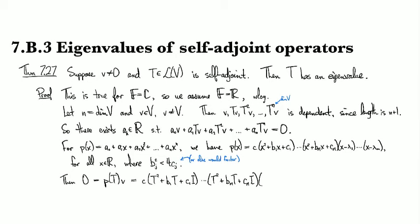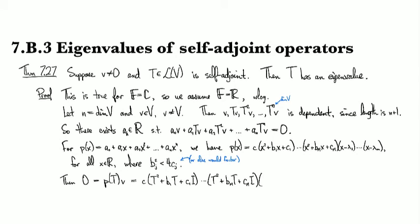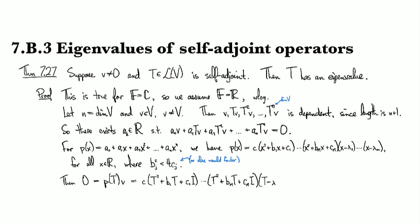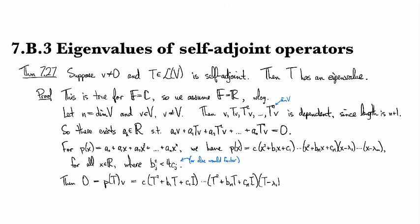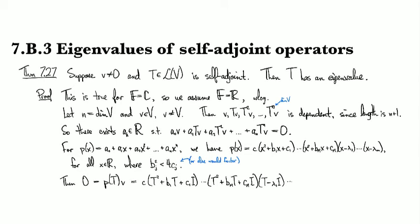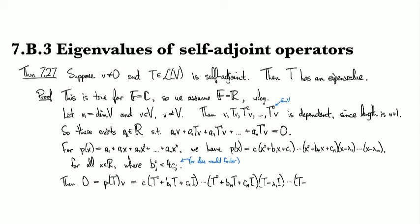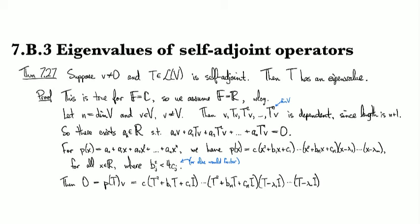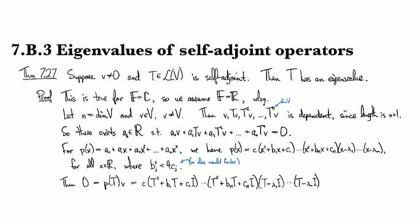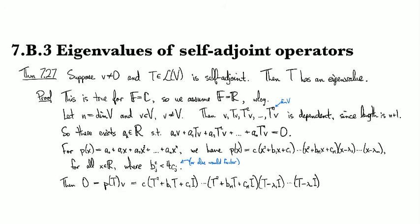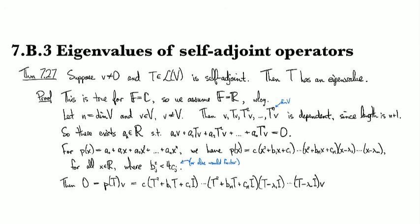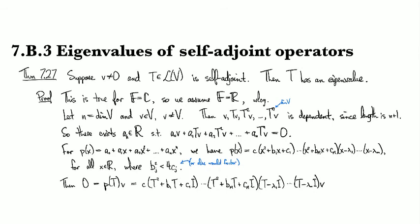And then we've got some linears. So there's our linear terms. And then this whole thing, this is p of T, so it's supposed to be applied to v, so there's my v at the end.